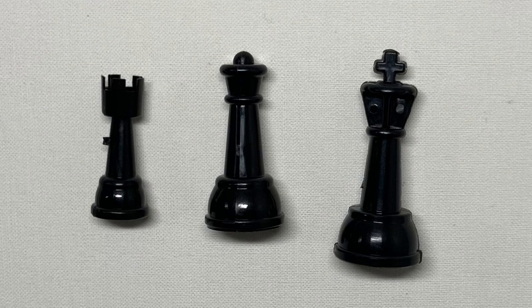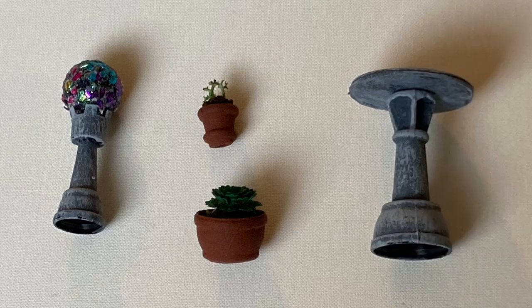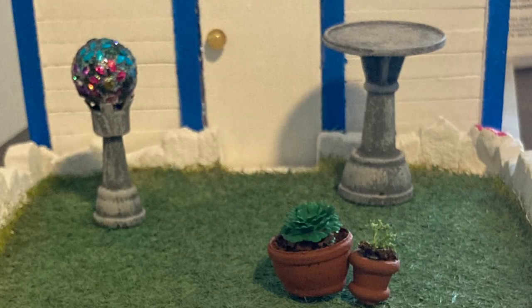Welcome back to Littles by Lyra. Today we'll make some garden accessories for a 1/24th scale dollhouse using a rook, a queen, and a king piece from a Dollar Tree chess set. First, let's talk a little bit about scale.